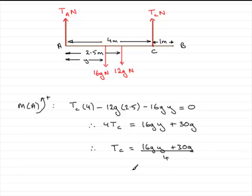If you take g to be 9.8 and divide each of these terms by 4, what you get is 39.2y. And 30g divided by 4 comes out as 73.5. And there you go, you have the tension in the rope at c in terms of y. That brings us now to the end of this part of the question.